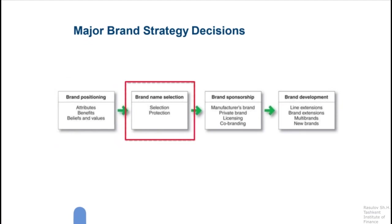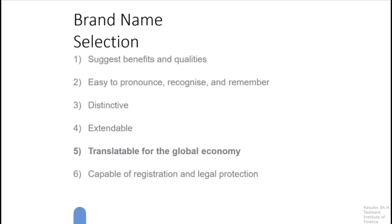Step 2: brand name selection. Here are some suggestions for selecting a good brand name. First, it should suggest benefits and qualities. Second, it should be easy to pronounce, recognizable, and easy to remember. Third, it should be distinctive. Fourth, it should be extendable, because you don't know whether in the future you will extend this brand to new product categories. Fifth, it should be translatable for the global economy, which is very important in today's globalization. Sixth, it should be capable of registration and legal protection.